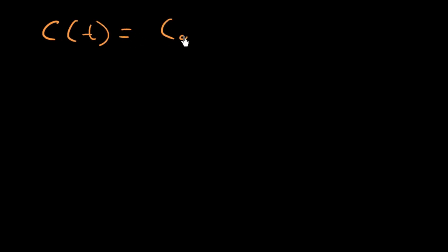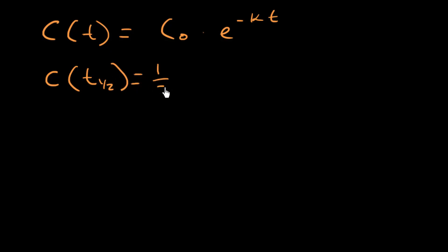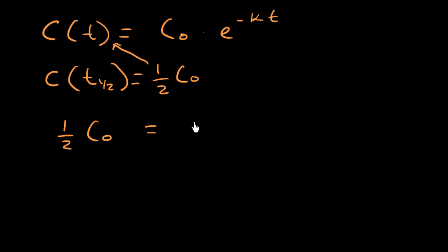The concentration at time t equals the initial concentration times e raised to the negative k times t. By definition, the concentration at t one-half — the half-life — is one-half your initial concentration. Plugging this in, we get: one-half times C₀ equals C₀ times e raised to the negative k times t one-half.